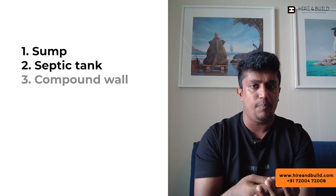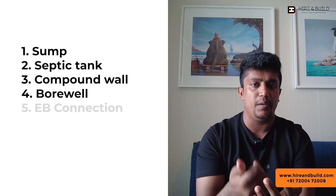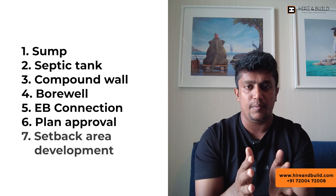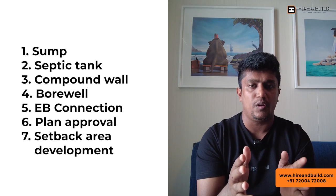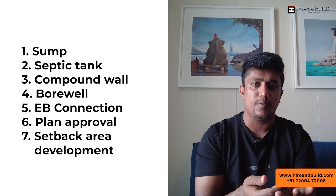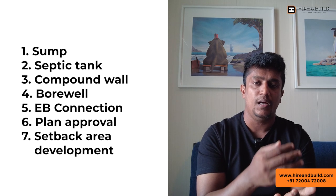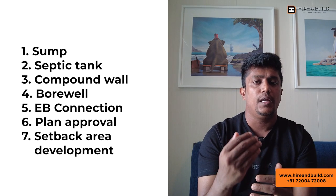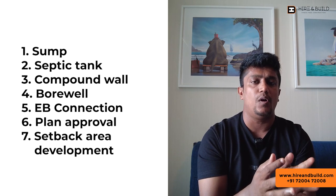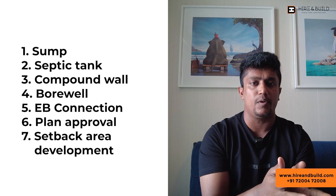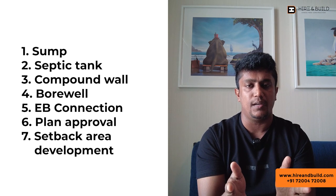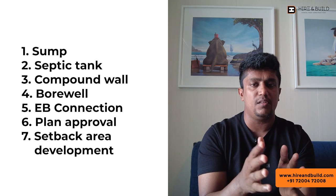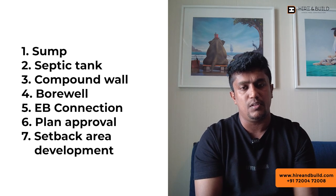Next, we have to look at the hidden costs in construction per square feet. First, there is a sump, a septic tank, and a compound wall. There is also setback area development. If you have land around the building, you need to decide what to do with it — put tiles, paver blocks, or gardening. The setback area has its own square feet cost. For the compound wall, the height, material, and capacity matter. Options include bricks or concrete. For the septic tank, you choose between a normal septic tank or a bio septic tank. We have to look at these specifications carefully as they all represent hidden costs.